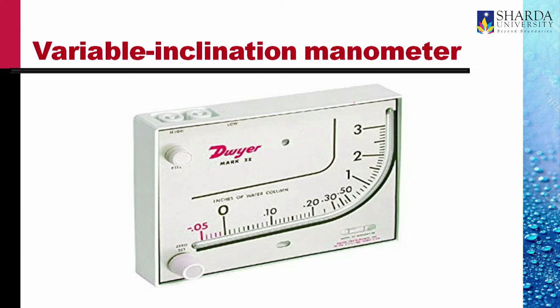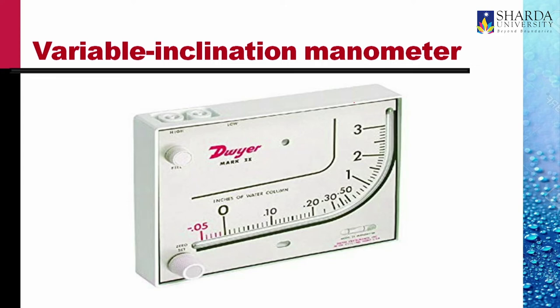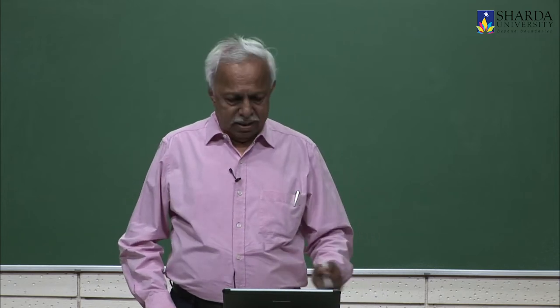This is another inclined tube manometer in which the inclination is variable. Errors in measuring very low liquid heights are large compared to errors in larger heights. So we need more inclination when the height of the column is less, but we can do with lesser inclination when the height is more. In this commercially available variable inclination manometer, the tube is curved such that the inclination at low values of head difference is large, but the inclination at higher values is low. In fact, the tube becomes vertical towards the higher end.